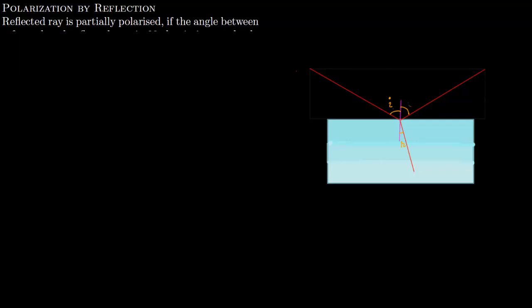Now we talk about polarization by reflection. There is a ray which is incident on a surface — it falls on the surface and gets reflected. Now if the falling light is unpolarized, the reflected light is partially polarized.